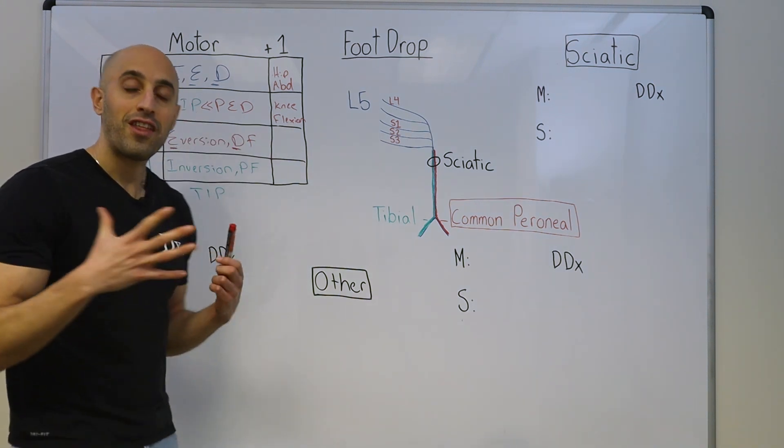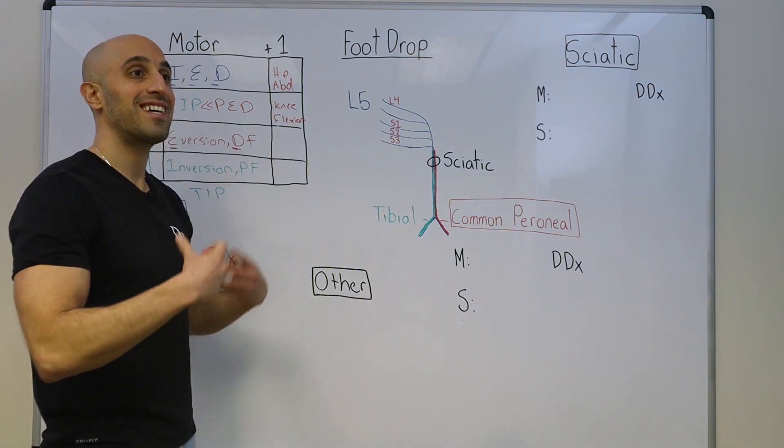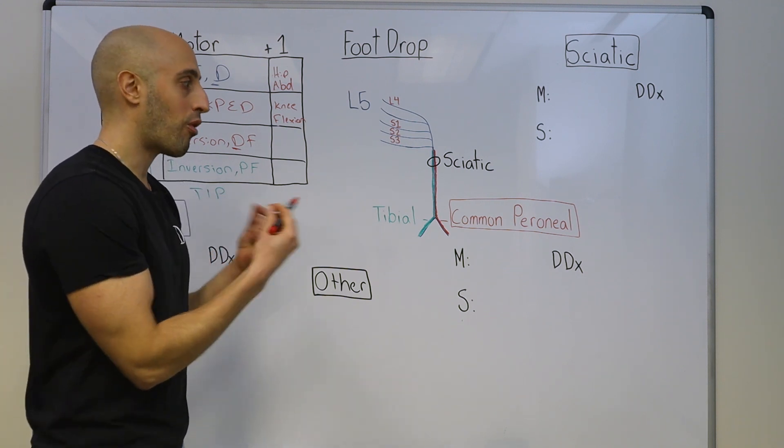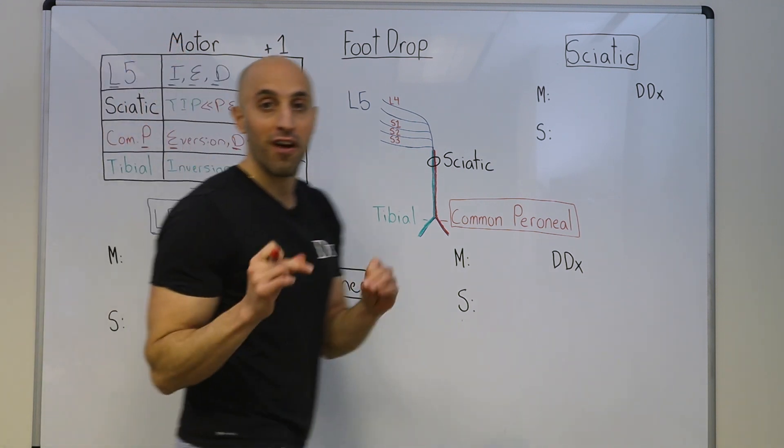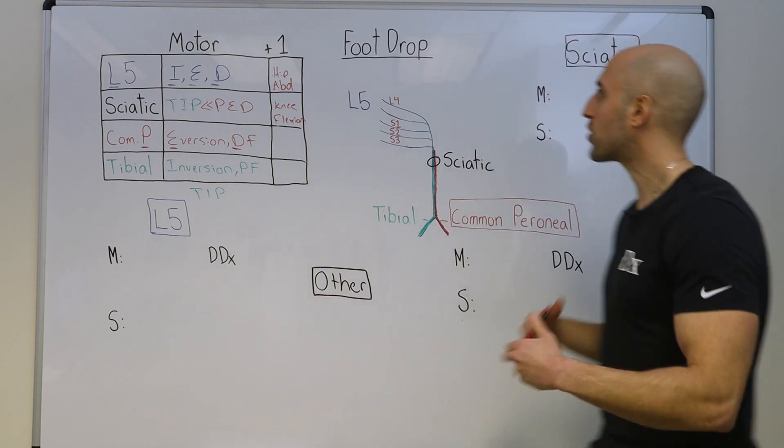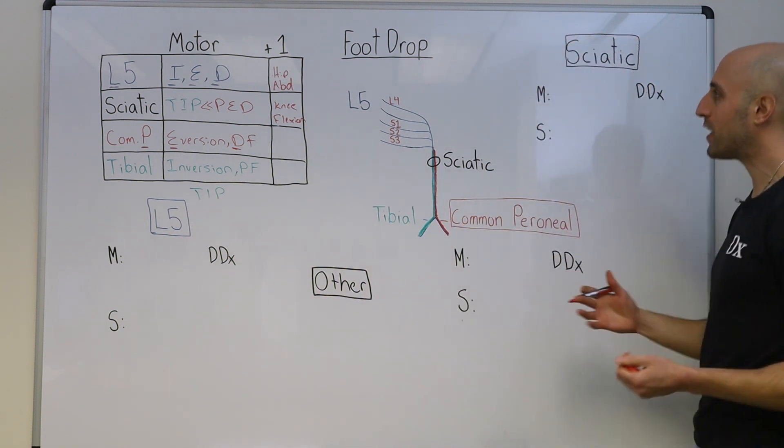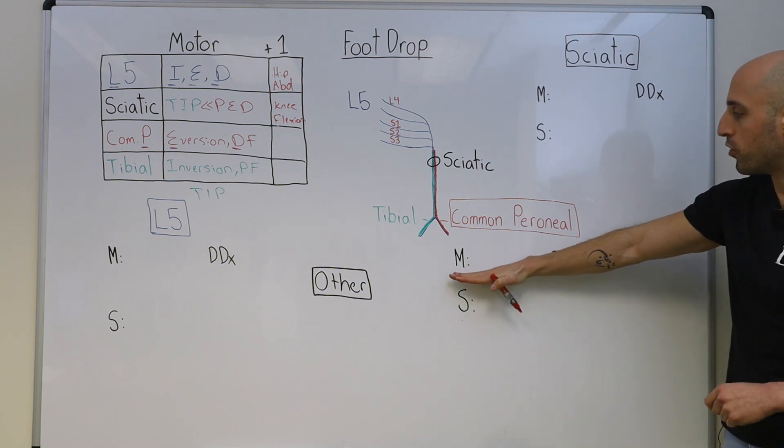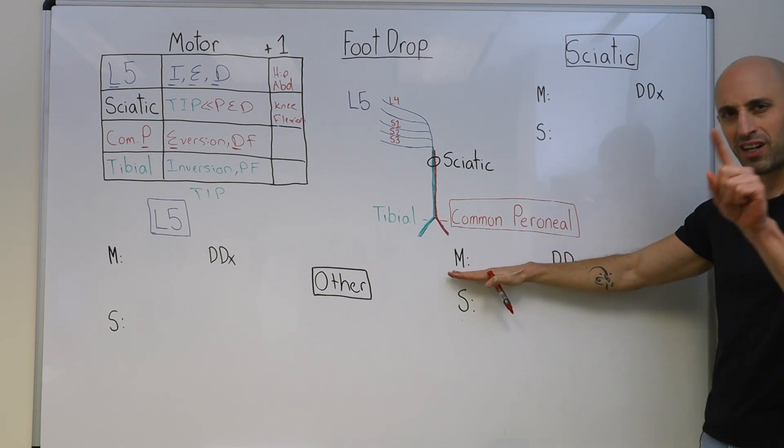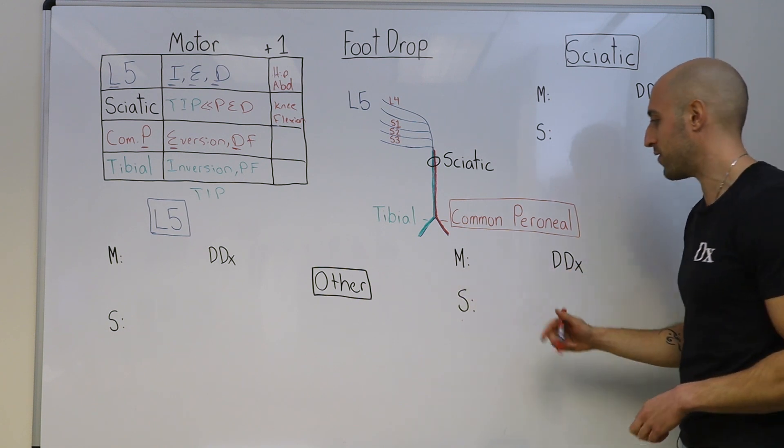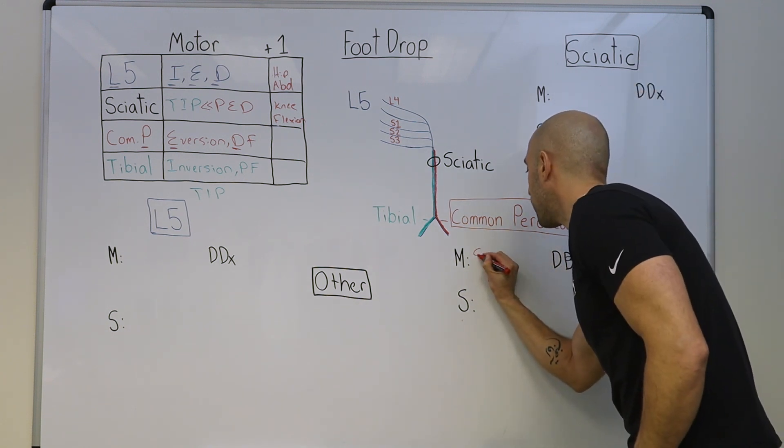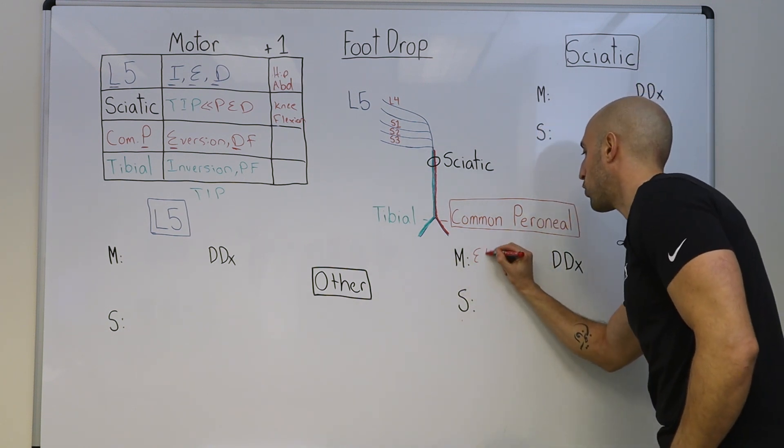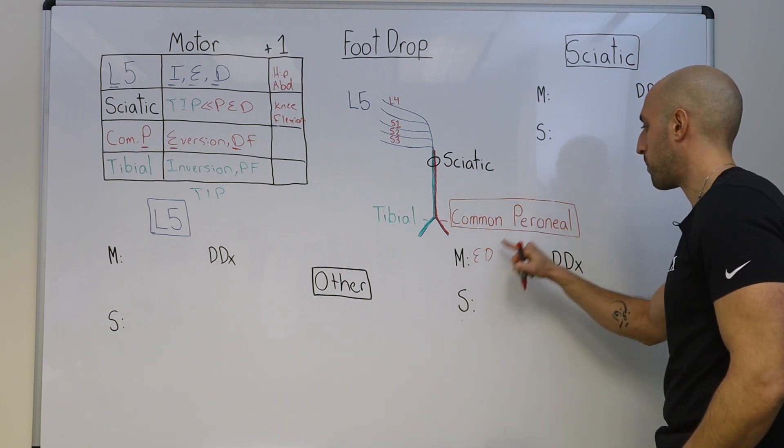Now that you understand normal, we can discuss abnormal and a prioritized DDX. We love base rate of disease and the most common cause of dorsiflexion weakness or foot drop is common peroneal neuropathy. What are the motor deficits that you expect? It's going to be inability for eversion and dorsiflexion. Remember our mnemonic PED.